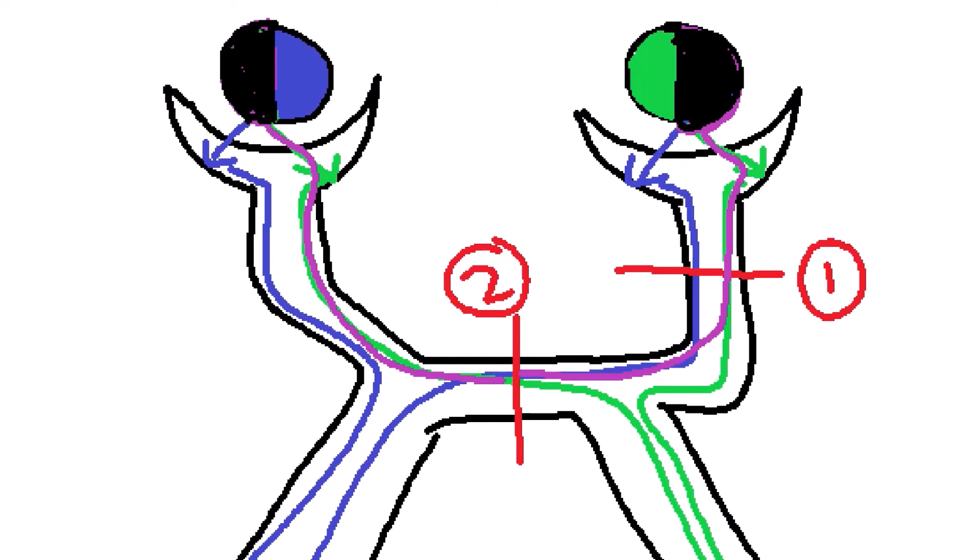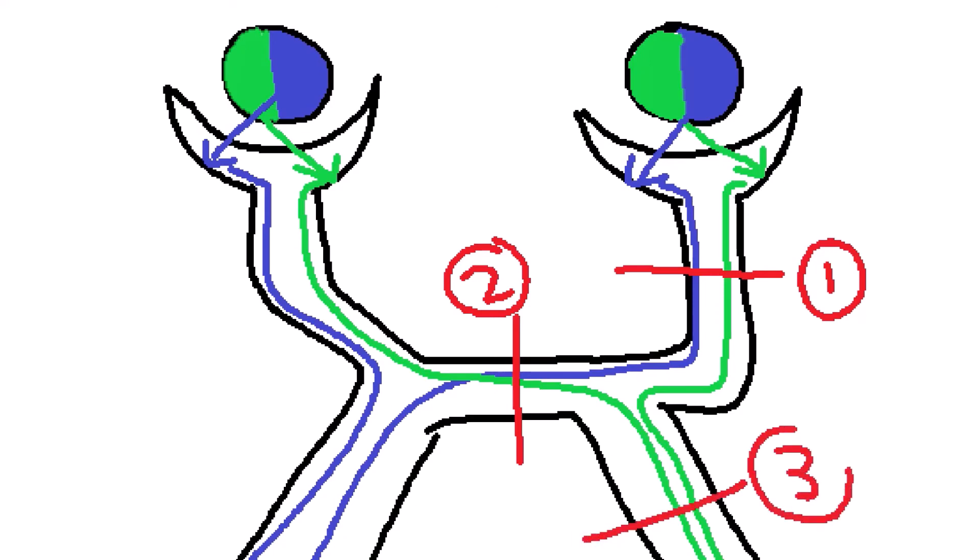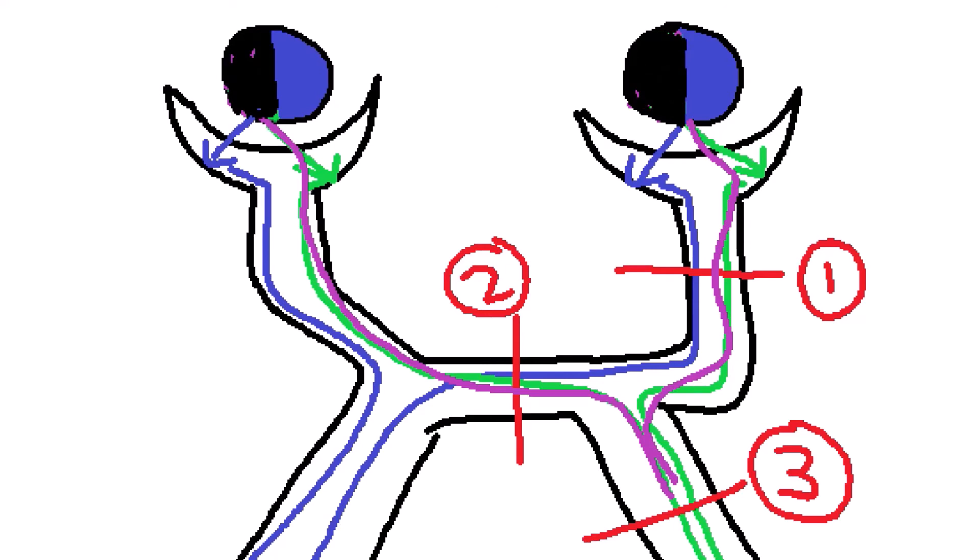Next, let's say there's a lesion in the optic tract. The optic tract is responsible for carrying information from the left visual field in each eye — this information won't make it. That leads to the patient being blind on the left side in both eyes, known as left homonymous hemianopsia.